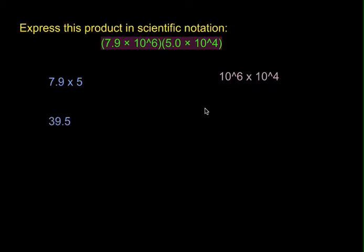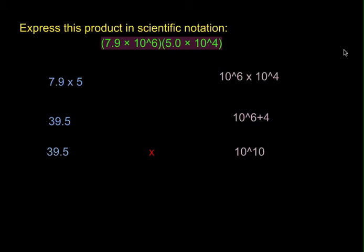To do 10 to the sixth times 10 to the fourth, you just add the exponents. So you do 6 plus 4, and that would be 10 to the tenth. So now, overall, you have 39.5 times 10 to the tenth.